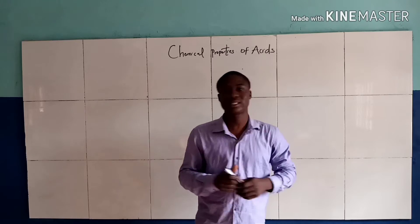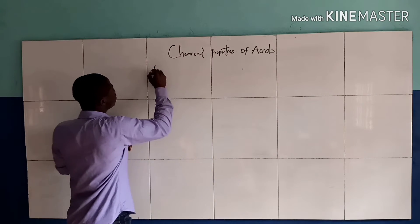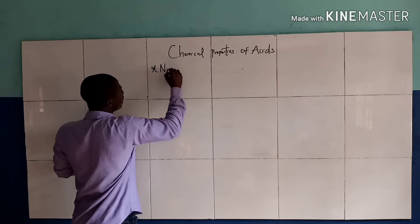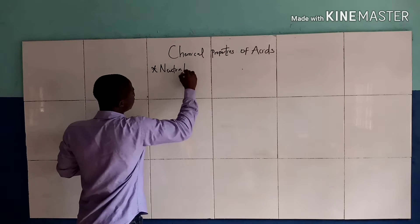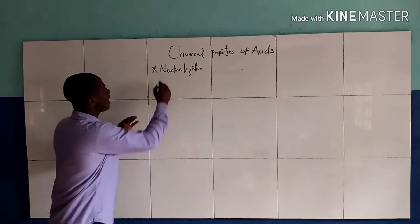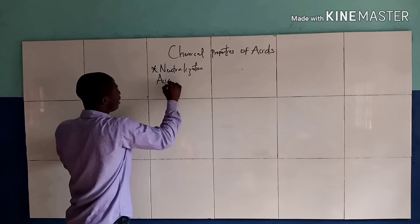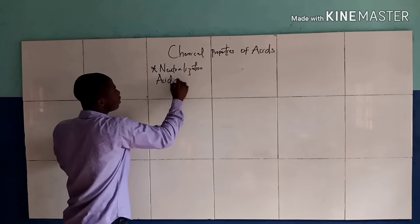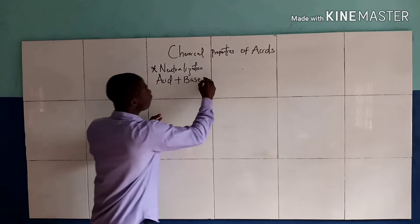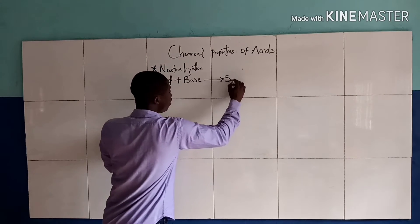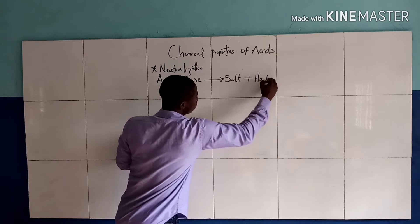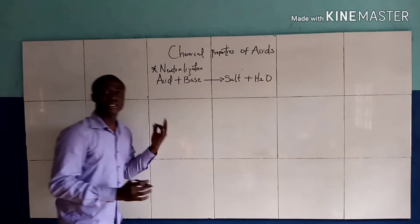The first chemical property of an acid is called neutralization. Neutralization is when an acid reacts with a base, and it forms a salt and water.